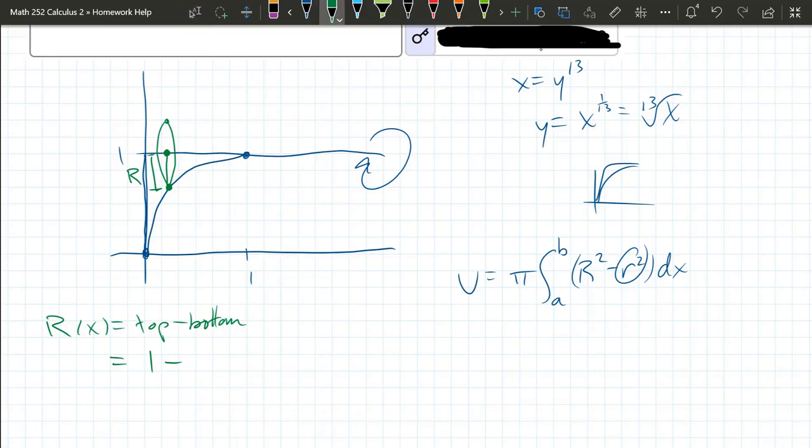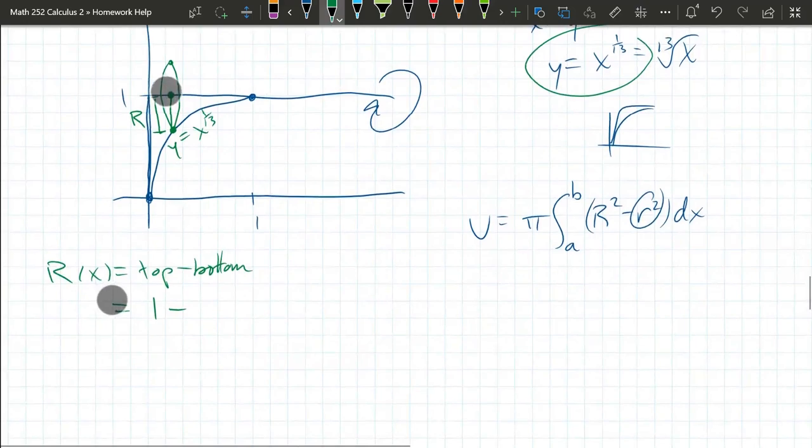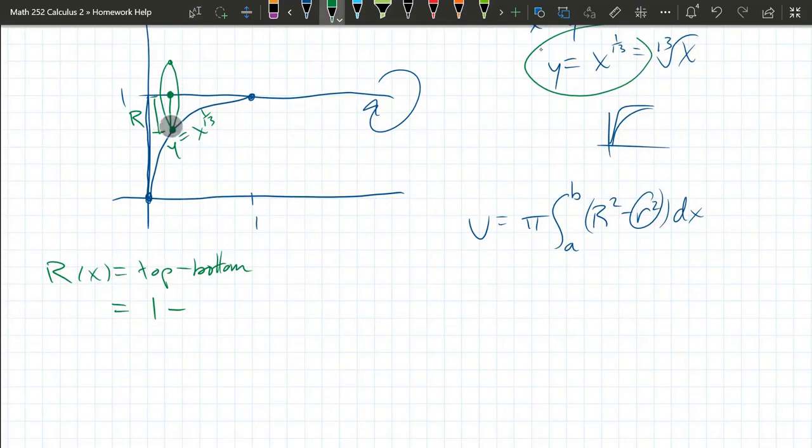It needs to be a function of x. So we need to write it as y equals x to the 1/13th power. And that's going to be the bottom. That's big R of x. And now we're ready to put it into the volume formula.